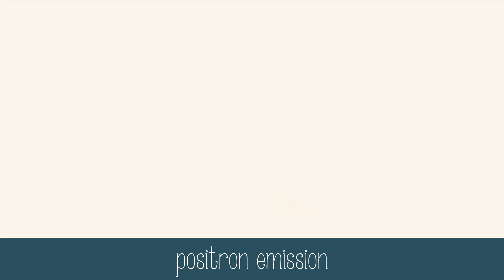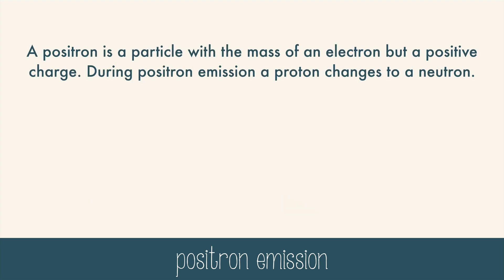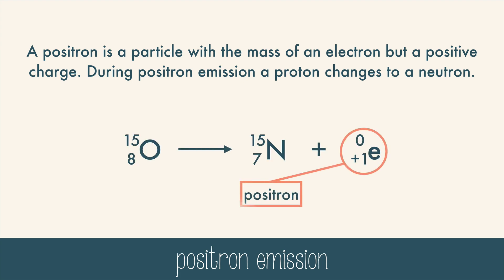In positron emission, a positron is formed — a particle with the mass of an electron but a positive charge. During positron emission, a proton changes into a neutron and releases a positron, creating a more stable nucleus. The mass number and atomic numbers are balanced in this equation.